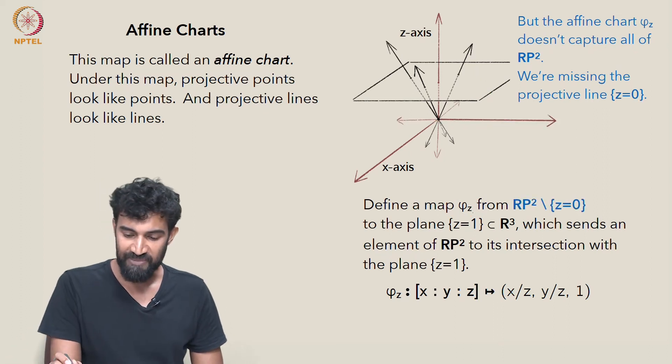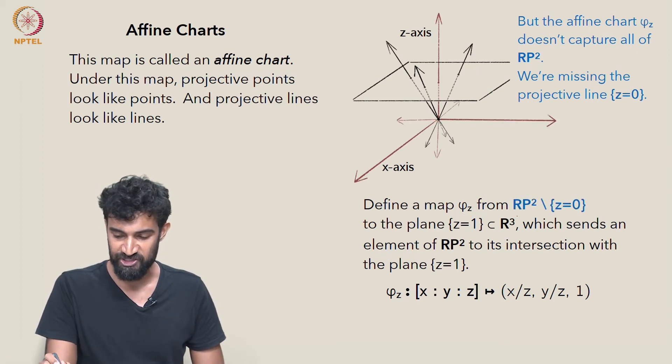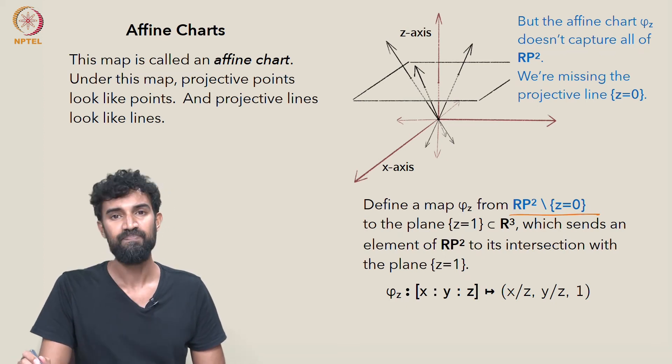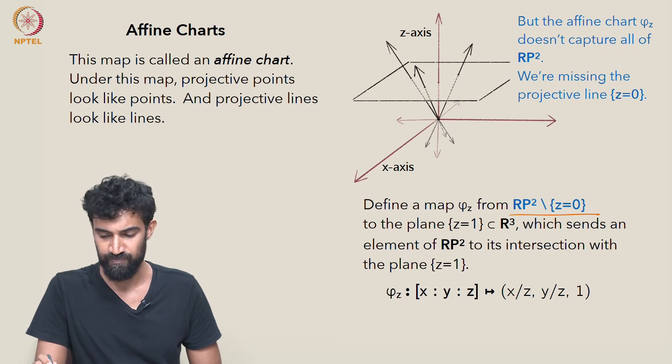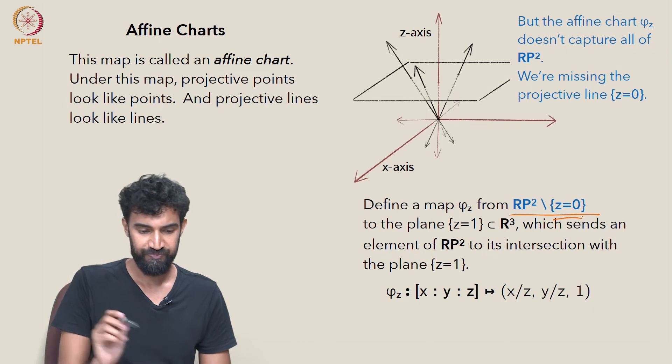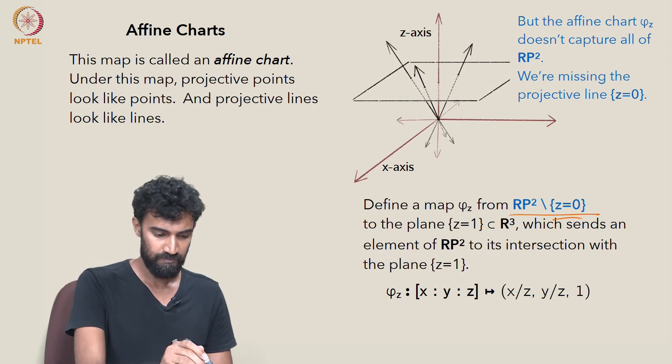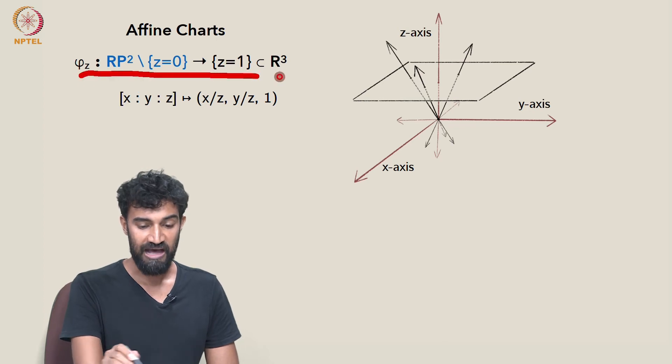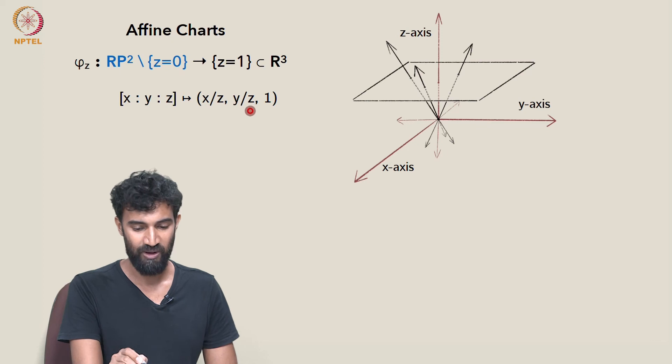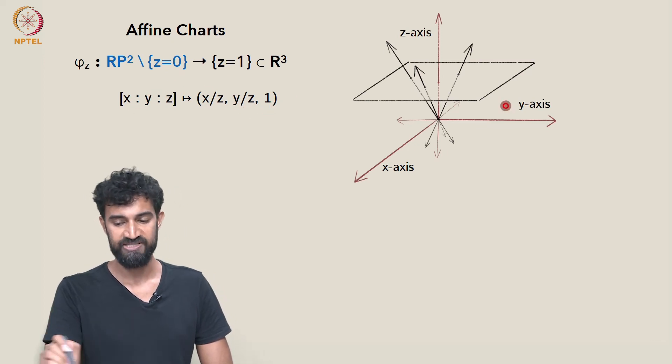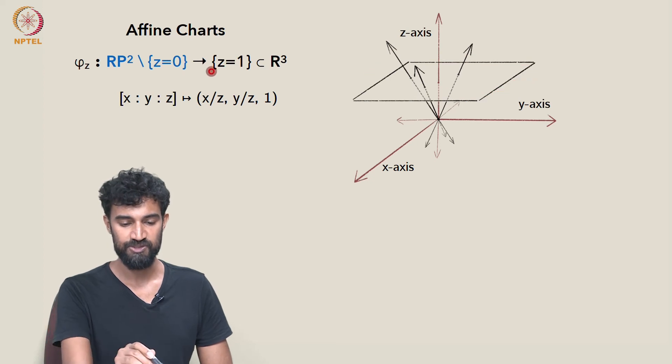So let's change our definition. φ_z is not defined on all of RP². It's defined on RP² minus the plane z equals 0. And now this map is well defined. So this is our map. It sends x, y, z to x/z, y/z, 1. It sends lines through the origin to points in the plane z equals 1.